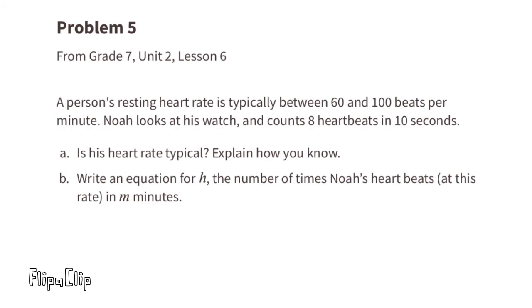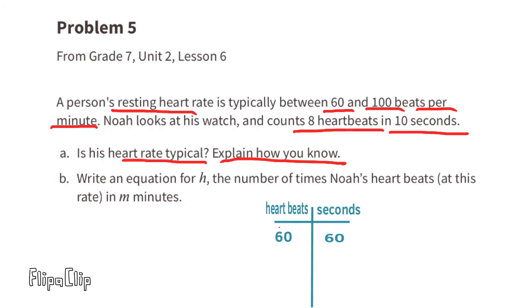Problem number five, from seventh grade Unit 2, Lesson 6: A person's resting heart rate is typically between 60 and 100 beats per minute. Noah looks at his watch and counts 8 heartbeats in 10 seconds. Part a: Is his heart rate typical? Explain how you know.